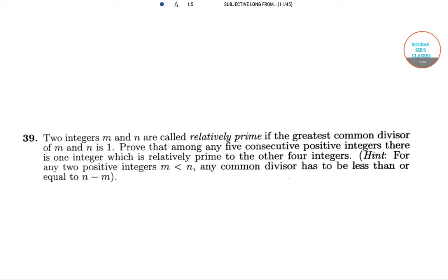In our next question, we have 2 integers, m and n, that are relatively prime if the greatest common divisor of m and n is 1. So, we have to prove that among any 5 consecutive positive integers, there is 1 integer which is relatively prime to the other 4 integers.